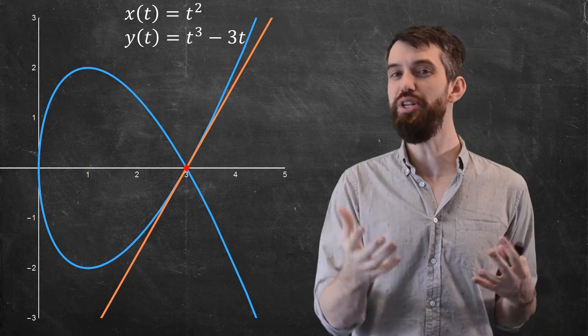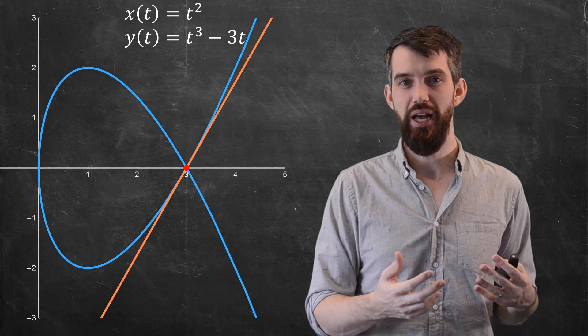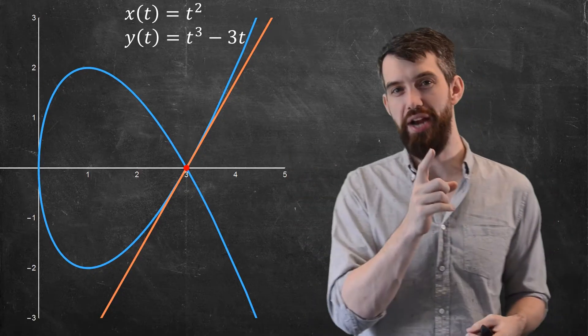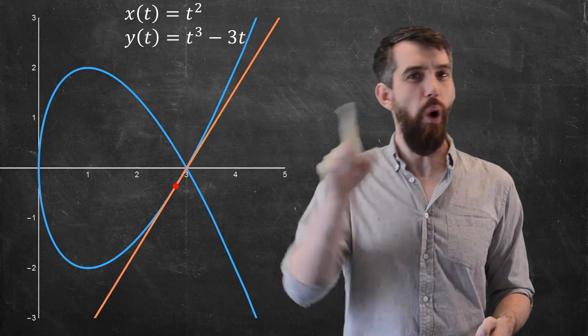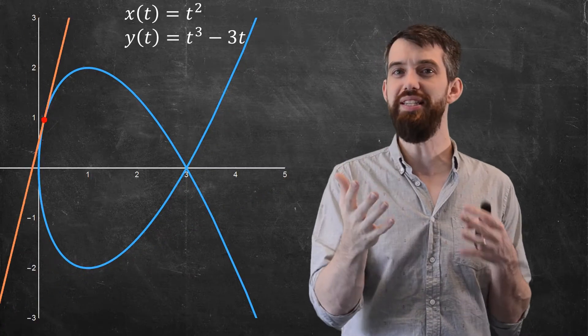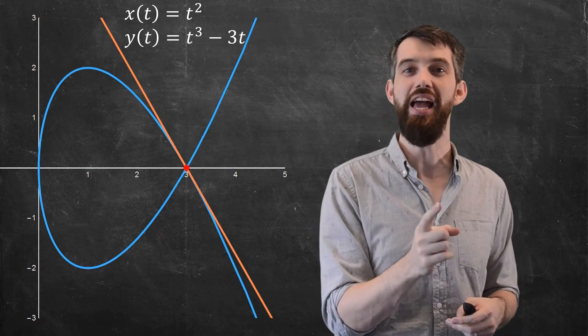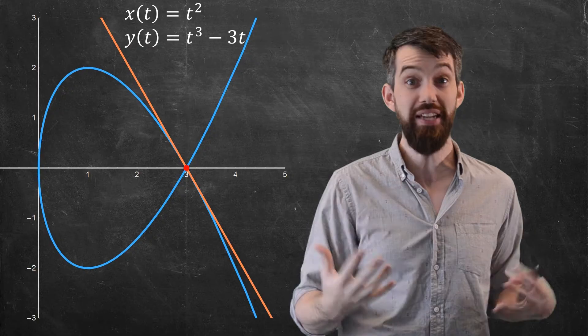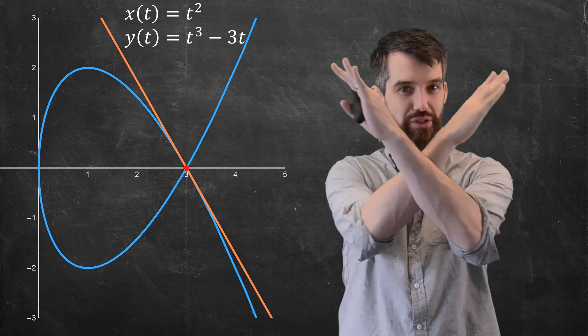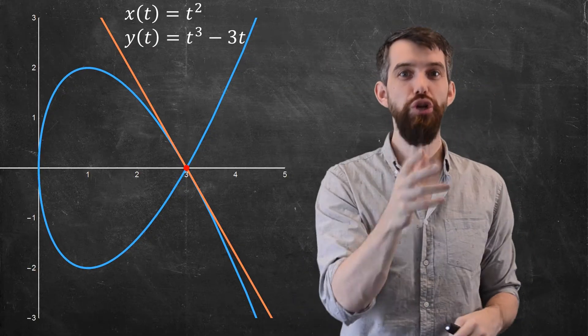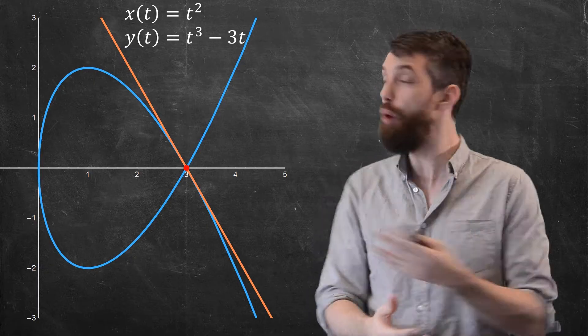Now, what's interesting about this (3, 0) point is that while there's this one tangent line here, imagine I go all the way around the loop, and what you're going to see is there's actually a second tangent line at that particular spot. That is to say that at this (3, 0), we have a sort of cross behavior, that there's two different tangent lines that both could be written down.